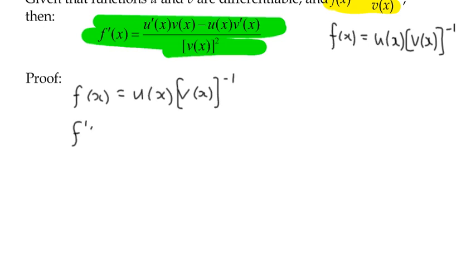And the product rule basically says differentiate the first function and multiply it by the second function as it is, and add to that the first function, and multiply it by the derivative of the second function.